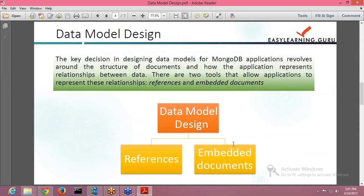There are two tools that allow the application to represent these relationships. First is your references and the second is your embedded documents. So in MongoDB, you categorize the models into two: references and embedded documents.